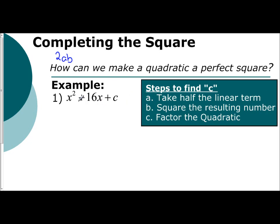So you're going to take half the linear term. And what that does is it cancels out that 2. And that gives you 8.